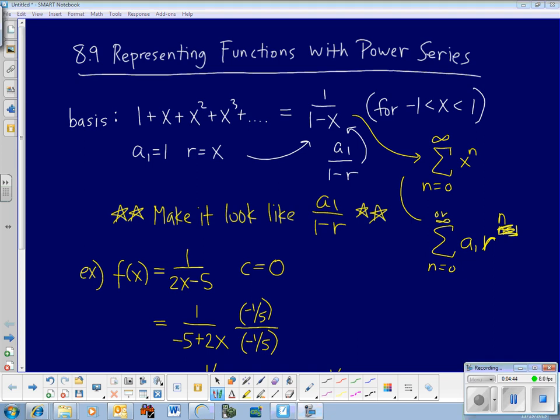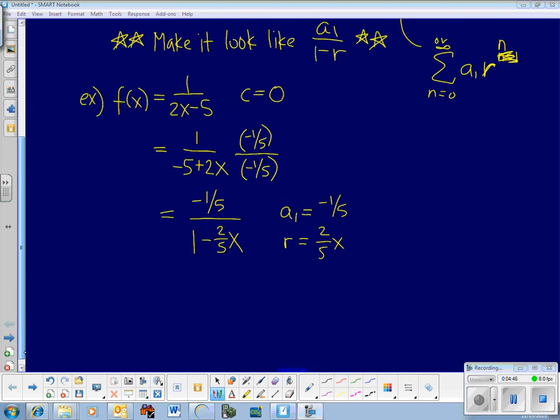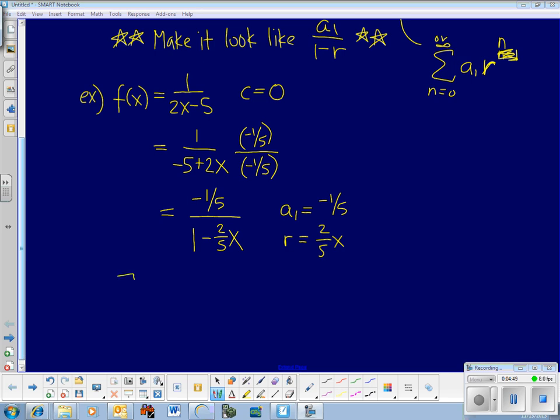So a₁ is negative 1 fifth and r is 2 fifths x. Now if we want to express this thing as a series, what we're going to do is we're going to put it into sigma notation. Think about this one up here. Another way to say this would be the sum from 0 to infinity of x to the n. So all you have to do once you make it look like the desired form is write it like this. Starting at 0, going to infinity, a₁ r to the n. So for us, it's going to start at 0, go to infinity. It's going to be negative 1 fifth times 2 fifths x to the n. So what we've created is an infinite series representation of the original function, 1 over 2x minus 5, centered about 0.